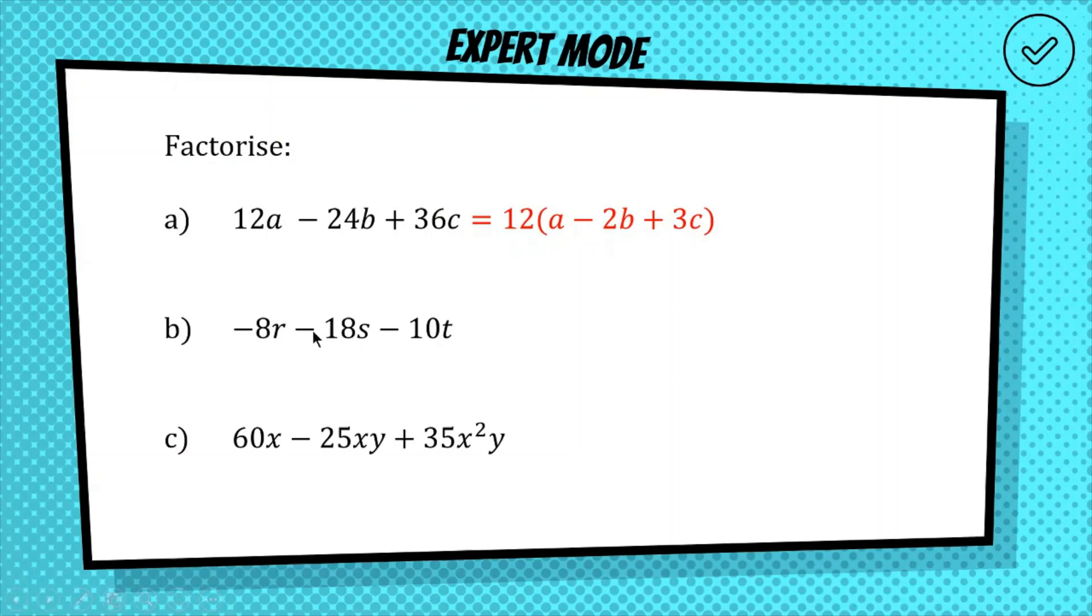Likewise, for the next one, we have three terms. We are looking for a common factor. Again, we've got r, s, and t, so there's no common algebra, unfortunately. We've just got to look at the numbers. We've got minus 8, minus 18, and minus 10. So we're trying to think of the highest common factor of those three numbers. I'll give you a second to think about it.